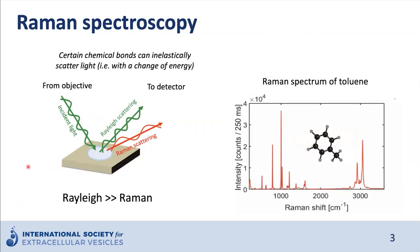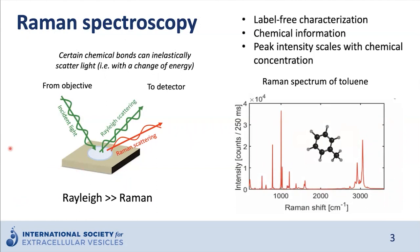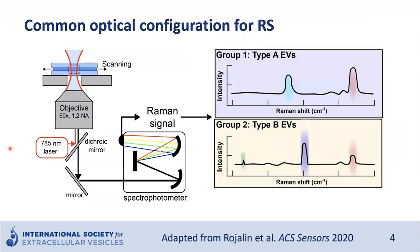The peaks in the 3,000 wavenumber region are related to carbon-hydrogen bonds throughout the molecule. The peaks around 1,100 arise from the carbon-carbon aromatic rings. Multiple combinations of molecules lead to giving this unique spectrum. Therefore, a Raman spectrum really is a chemical fingerprint. It's label-free — just the inherent chemical makeup of the sample — and it's linear, meaning that peak intensity scales with concentration. If you mix in a second chemical like ethanol, the resulting spectra would be a linear combination of toluene and ethanol, allowing you to measure complex assemblies of biomolecules like cells or EVs and break them down into relevant constituents in a quantitative manner.